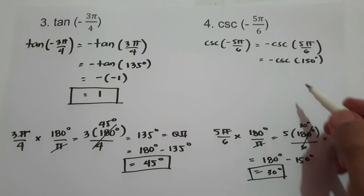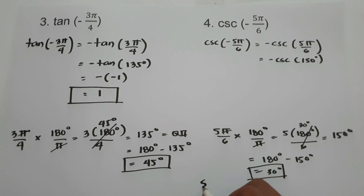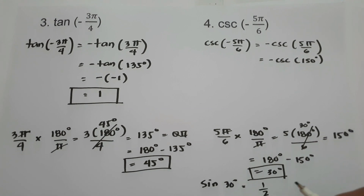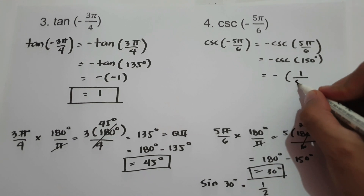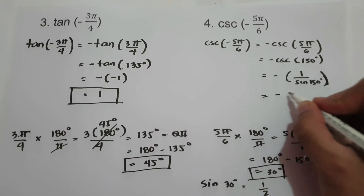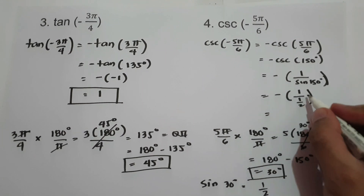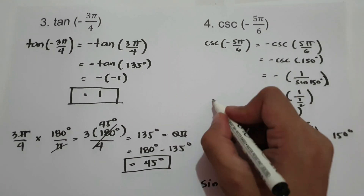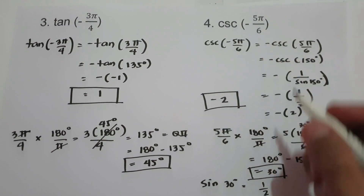We know that cosecant is the reciprocal of sine. So sine(30°) in quadrant 2 is 1/2. Taking the reciprocal, we get -1/sine(150°) = -1/(1/2). That is -2. And this will be the value of cosecant(-5π/6).